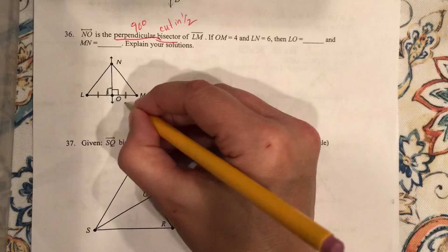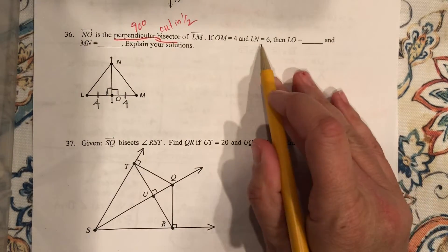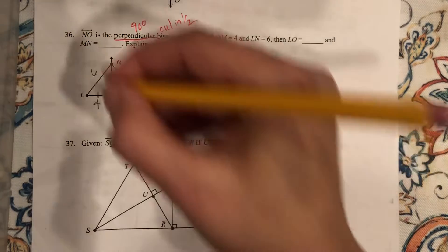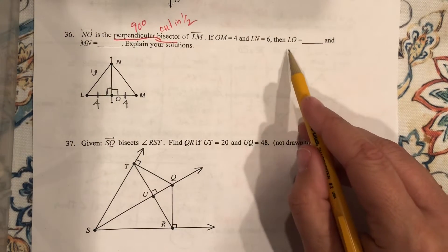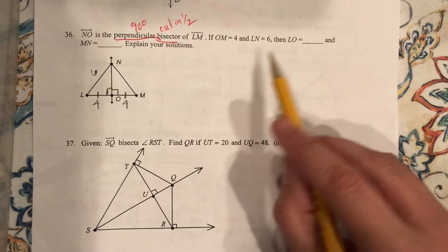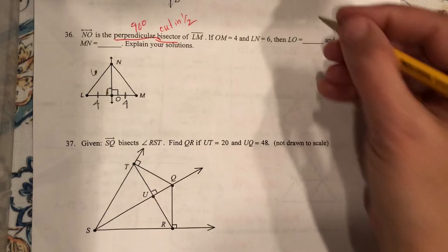If OM is 4, that means what? LO is also 4. And LN is 6. Then what's LO? Well, that's pretty simple. OM is 4, and LN is 6. LO is 4.